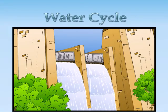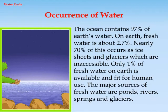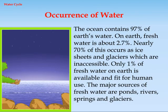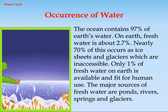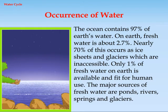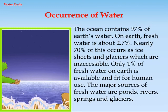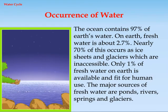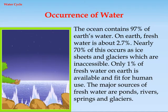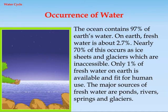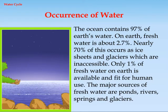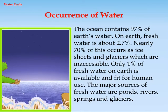Water Cycle. Occurrence of Water: The ocean contains 97% of Earth's water. On Earth, fresh water is about 2.7%. Nearly 70% of this occurs as ice sheets and glaciers, which are inaccessible. Only 1% of fresh water on Earth is available and fit for human use.